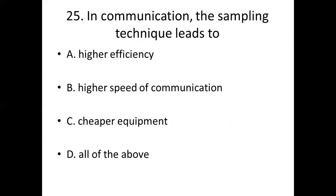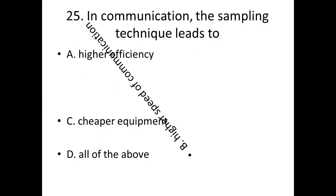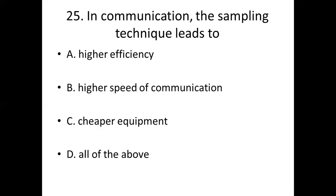25th bit. In communication, the sampling technique leads to: Option A, higher efficiency. Option B, higher speed of communication. Option C, cheaper equipment. Option D, all of the above. Answer: Option B, higher speed of communication.